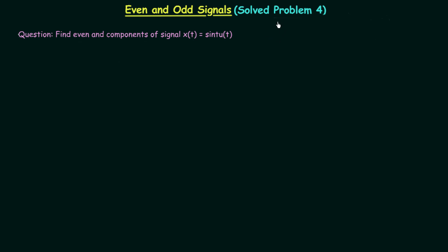In this lecture we will solve the fourth problem based on even and odd signals. In the previous problem we obtained the even component and the odd component of signal x(t) by using the formula for even component and odd component. We used the formulas because we were not able to use the properties of even and odd signals.